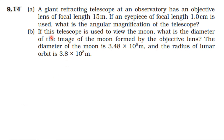If this telescope is used to view the moon, what is the diameter of the image of the moon formed by the objective lens? The diameter of the moon is 3.48 × 10⁶ meters and the radius of the lunar orbit is 3.8 × 10⁸ meters.